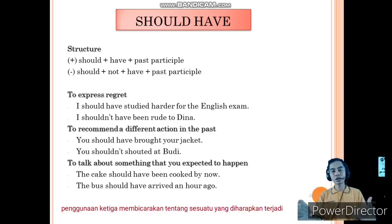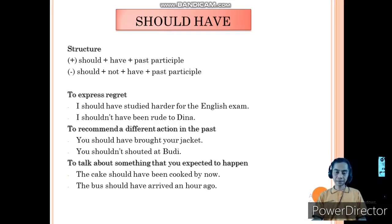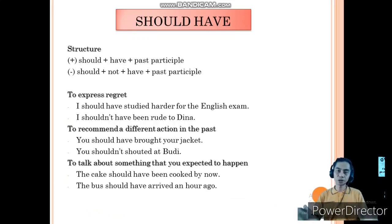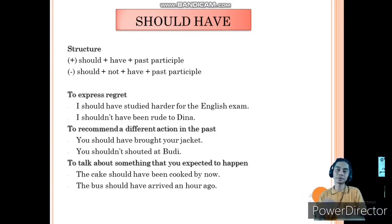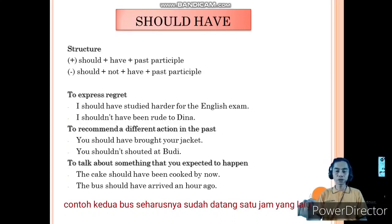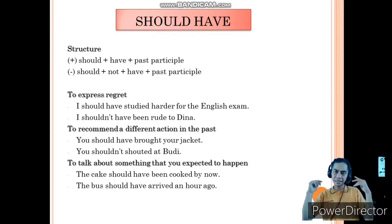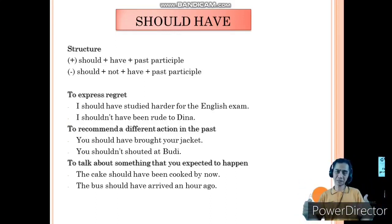The third usage of should have is to talk about something that you expected to happen. Example: 'The cake should have been cooked by now.' We are expecting the cake is already cooked, but unfortunately it's still in the process of cooking, so we cannot eat it. The second example: 'The bus should have arrived an hour ago.' We have already waited for the bus for about 2 hours. We expected it should have arrived an hour ago, but the bus still hasn't arrived yet — meaning the bus is late.